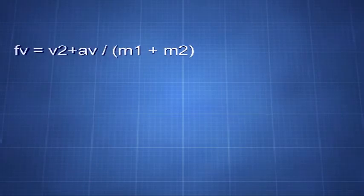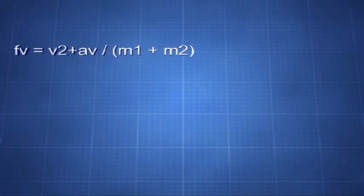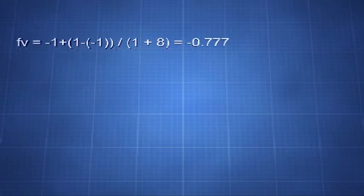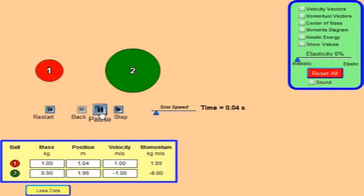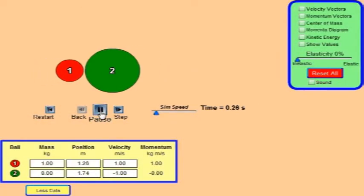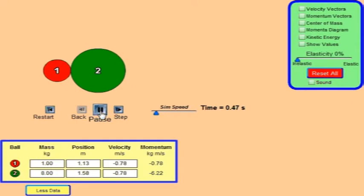We must take into account that v2 is actually moving in the opposite direction, so we add v2 once again to the equation, as in fv is equal to v2 plus av divided by m1 plus m2, or for instance minus 1 plus 1 minus minus 1 divided by 1 plus 8 equals minus 0.77. We have been logically and factually verified that this describes the final velocity of m1 in an inelastic collision.